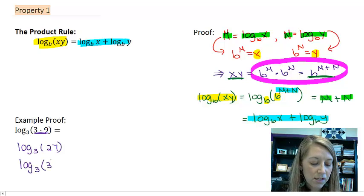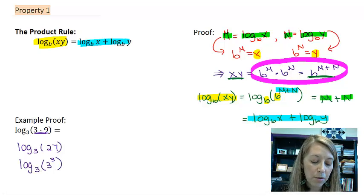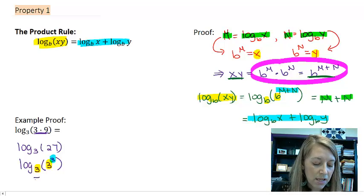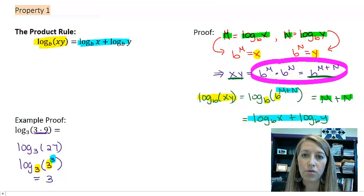And then I can convert 27 into the base of 3, so I can simplify it very easily. So 27 is 3 to the third power. Well, here I'm using that same property that we've seen multiple times. My bases match, so they cancel out, so that gives us a simplification of 3.